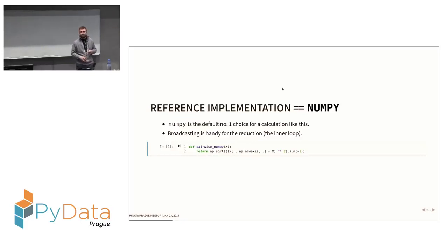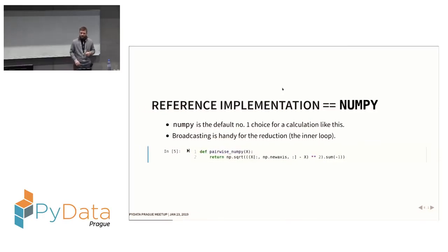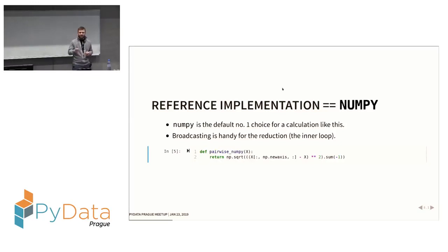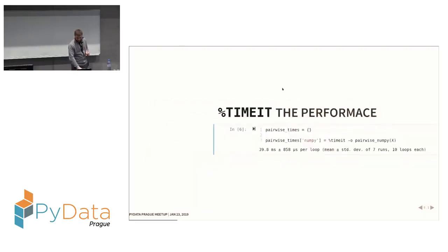We probably all know that NumPy would be the number one choice for this kind of calculation in Python. Here you can see how it's implemented. One particular handy feature is broadcasting — NumPy can automatically broadcast or extend dimensions, and we use it here to do the pairwise calculation and reduce to get the results we want. It's a one-liner and it does the job well.